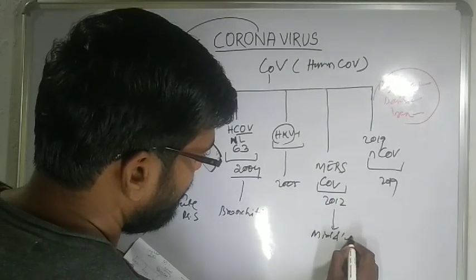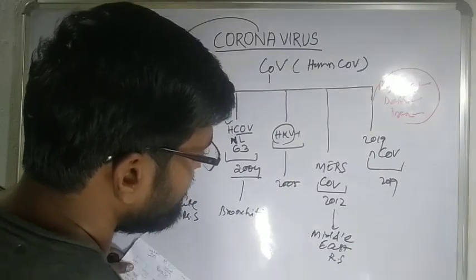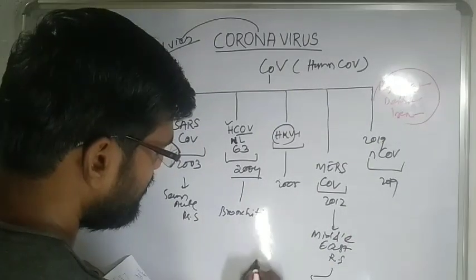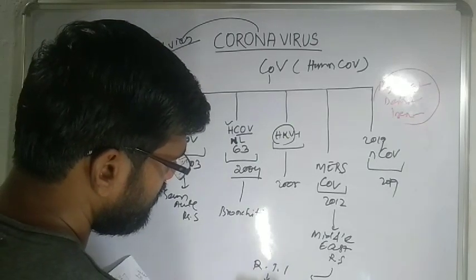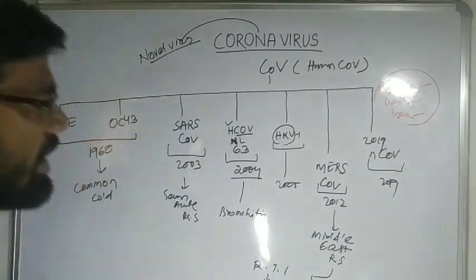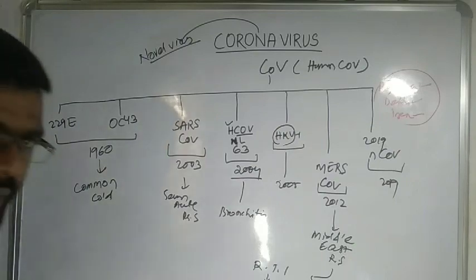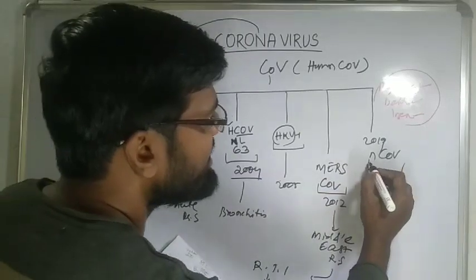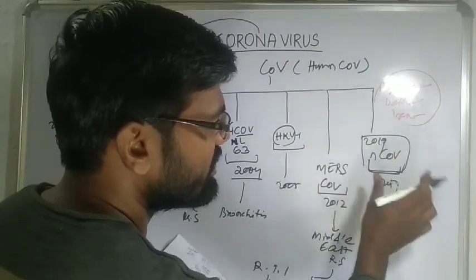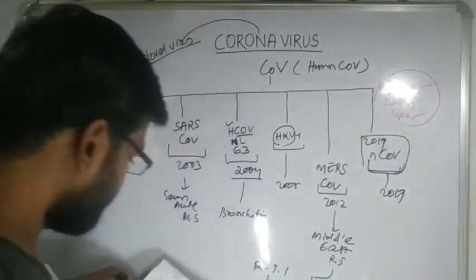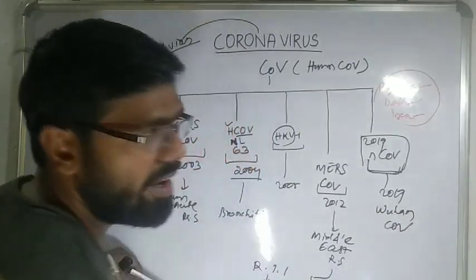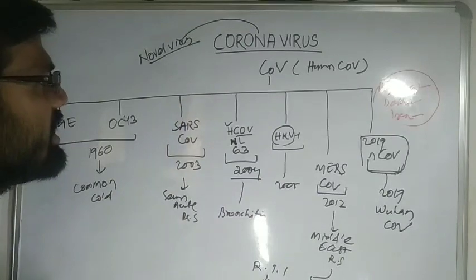HKU1 stands for Hong Kong University 1, as this virus was found in Hong Kong. MERS causes Middle East respiratory tract infections and is also known as camel flu — similar to bird flu, swine flu, or horse flu. The latest virus, discovered from Wuhan province, is named 2019-nCoV, or 2019 novel coronavirus, also being called the Wuhan coronavirus.